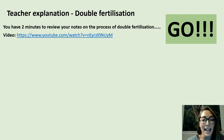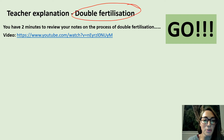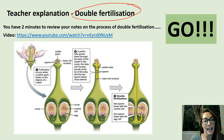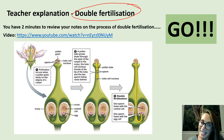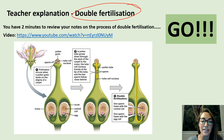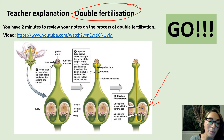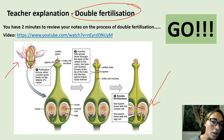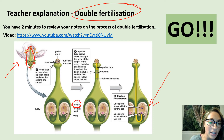Please pause the video and jot down as much as you can about double fertilization. Double fertilization refers to the two fertilization events that occur in the ovule of the carpel of a flowering plant. You can see here a flower, and if we zoom in on the carpel and look specifically at the ovule, this is where double fertilization takes place.